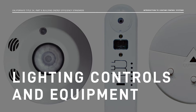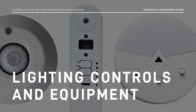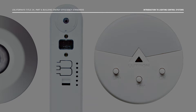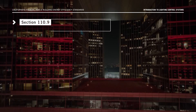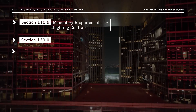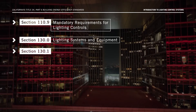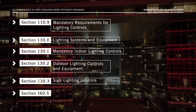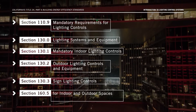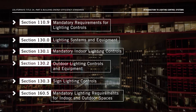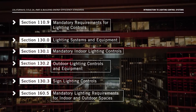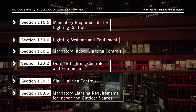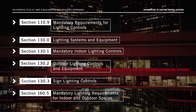Let's begin by talking about lighting controls and equipment. As you'll see in sections 110.9, 130.0, 130.1, 130.2, 130.3, and 160.5 of the Energy Code, they're required in order for non-residential, high-rise residential, hotel, and motel buildings to be compliant.